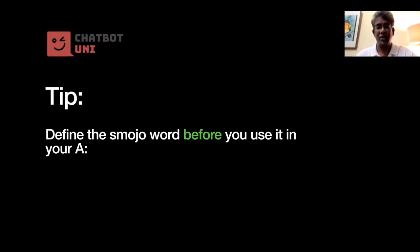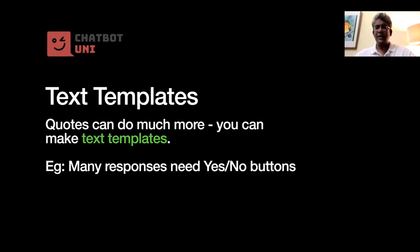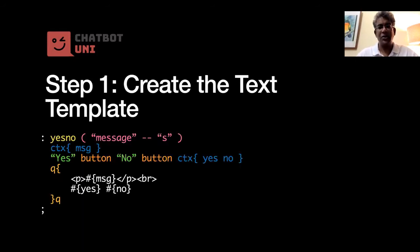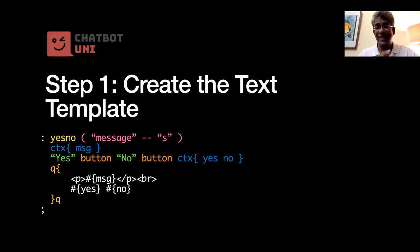We can also use codes to create text templates, which is most useful when you want to repeat a certain pattern — for example, putting yes or no buttons onto your text, or putting content into a table. Say we want to put a yes and no button at the bottom of a message. Here we've got a 'yes-no' smodier word. Smodier is always read left to right and top to bottom, so this word takes a message as input text and returns a piece of text, indicated by the S. The pink text is just comments.